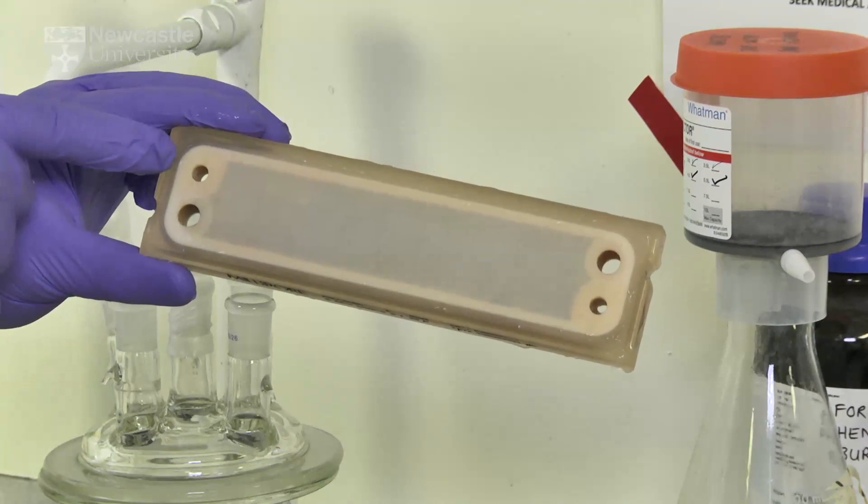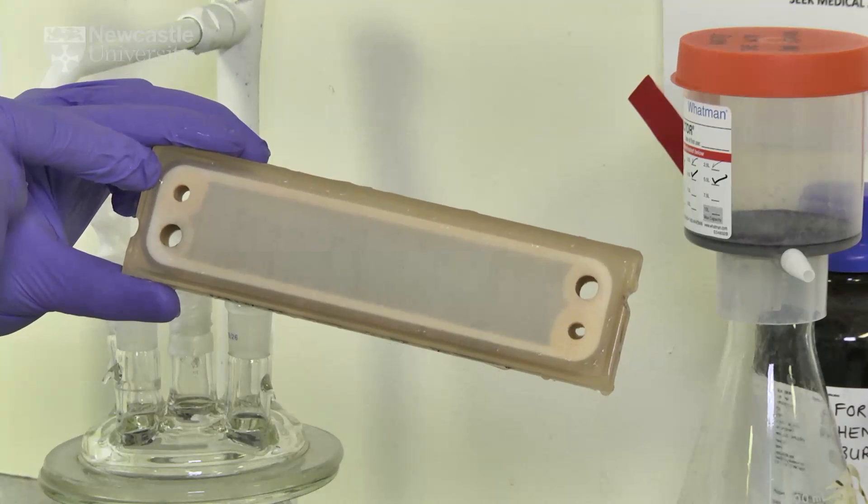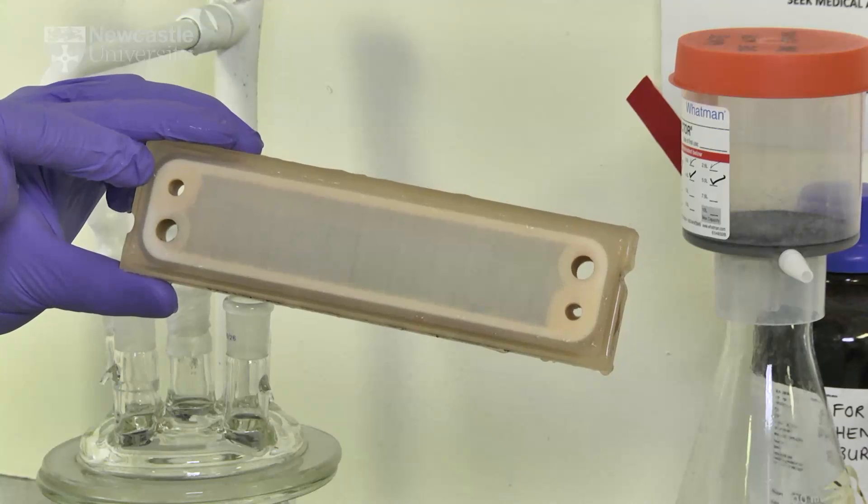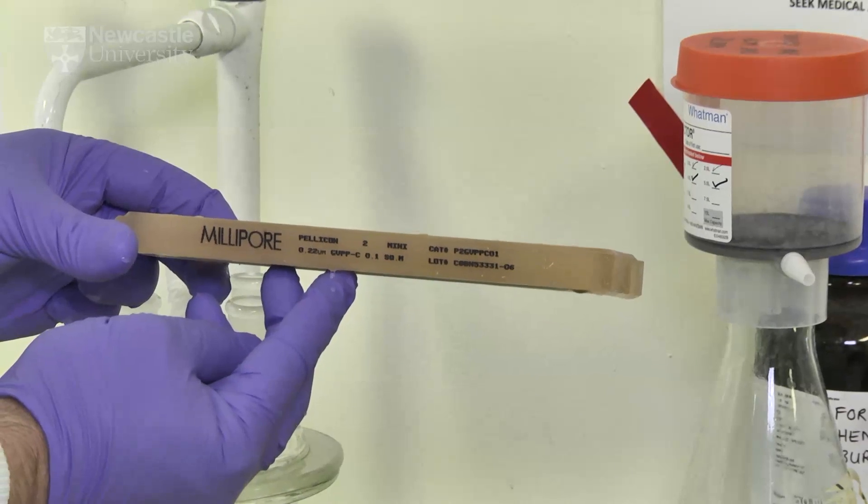This exit indicated here allows the permeate pressure to be measured with the addition of a pressure gauge. These Millipore cassettes have a surface area of 0.1m² and a nominal pore size of 0.22 micrometres.